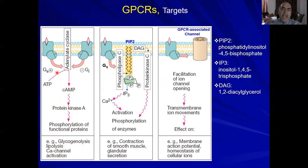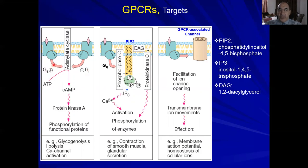The second G-protein family is Gi — inhibitory. The same mechanism applies: ligand binds receptor, GPCR activates G-protein to GTP status. But because it is Gi (inhibitory), it will inhibit adenylate cyclase, which inhibits the conversion of ATP to cyclic AMP and inhibits protein phosphorylation. So Gi produces the opposite effect of Gs.